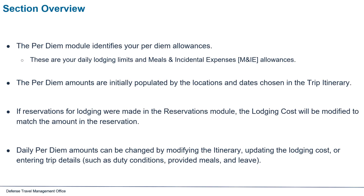The per diem module identifies your per diem allowances — your daily lodging limits and meals and incidental expenses allowances. The per diem amounts are initially populated by the locations and dates chosen in the trip itinerary. If reservations for lodging were made in the reservations module, the lodging cost will be modified to match the amount in the reservation.